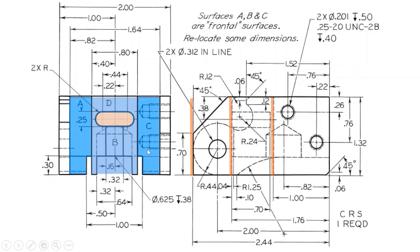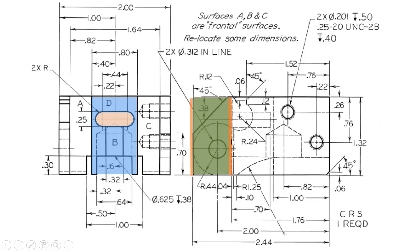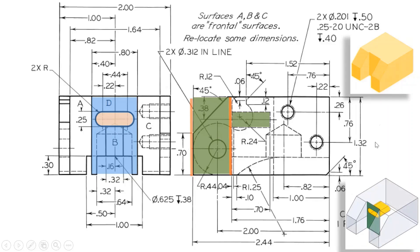Once we have identified the position of surface D, we sketch the true shape of surface D on the front face and remove the material, leaving behind a wall thickness of 1.76. On the new surface generated, we make the true shape of the straight slot and cut it deep by a depth of 0.7. These two steps — generating surface D and then the straight slot from that surface — are described in the inset pictures.